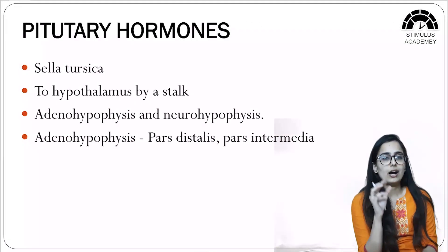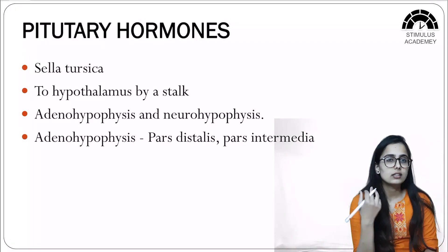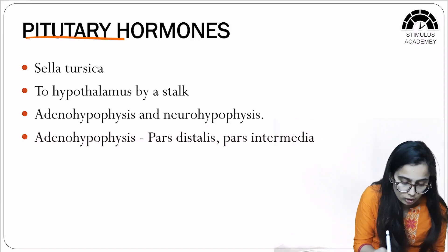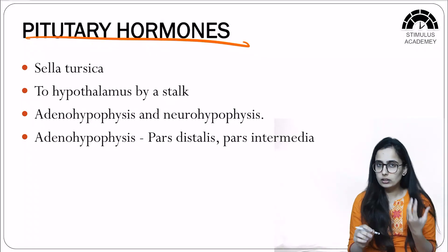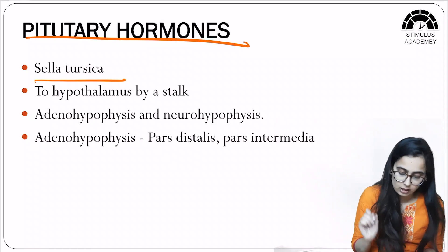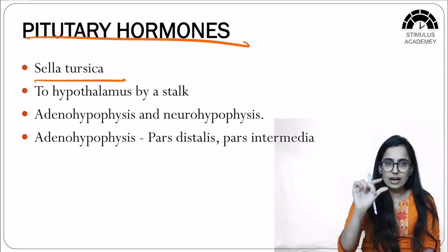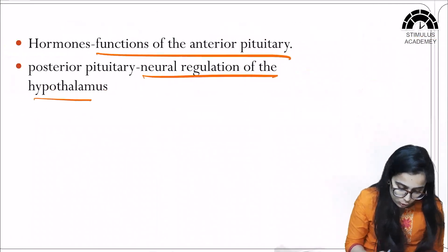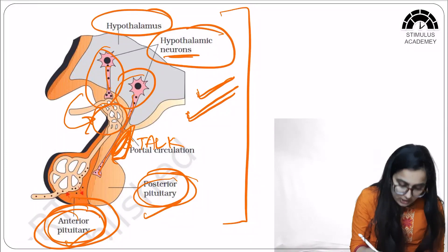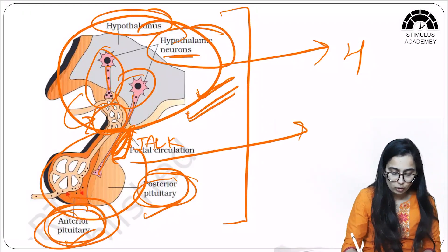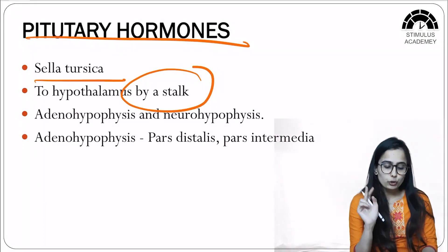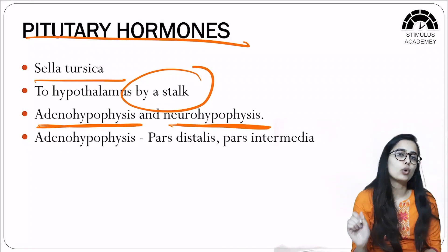Now we'll talk about the pituitary gland. The pituitary is located in a bony cavity called the sella turcica. The pituitary gland is connected to the hypothalamus with the help of a stalk, which we can see in the diagram connecting the two structures.